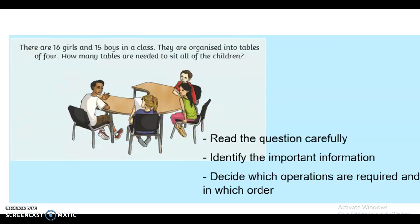This time, there are 16 girls and 15 boys in a class. They are organised into tables of four. How many tables are needed to sit all of the children? Remember, read the question carefully, identify all of that important information, and then decide which operations you think are needed, and in which order. I'm going to read the question one more time, before you're going to have another go on your pen and paper. There are 16 girls and 15 boys in a class. They are organised into tables of four. How many tables are needed to sit all of the children? I'm going to pause it now, and you have a go on your pen and paper. And then once you have done all your workings out, you can press play again. Good luck.